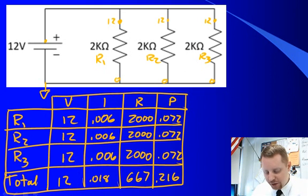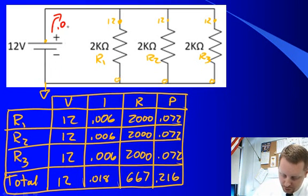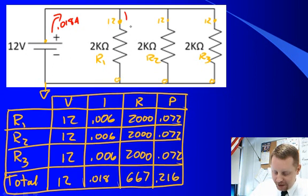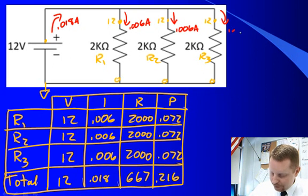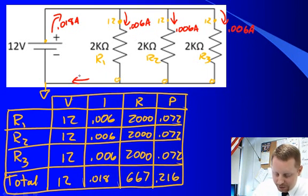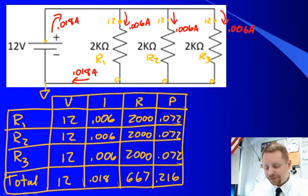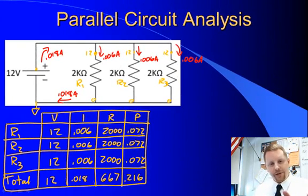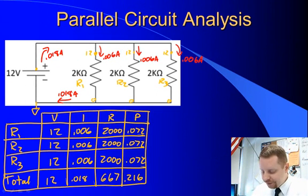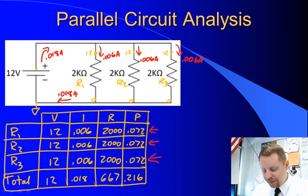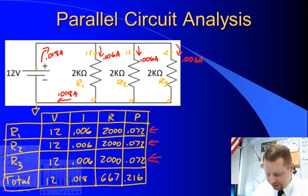Let's take note of a couple things. The currents through each of the elements add up: our total current is 0.018 amps, it splits — 0.006 amps through R1, 0.006 through R2, and 0.006 through R3 — then they come back and add together again. Kind of like a river that diverges into three separate streams; the current splits up but when it all comes back together downstream, you have the same amount of current. Powers also add up: the power dissipated in R1, R2, and R3 sum to the total power dissipated — 0.216 watts.